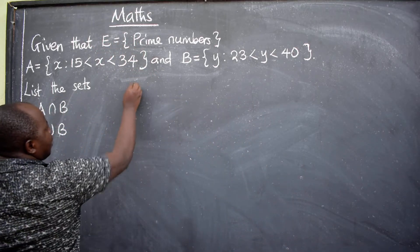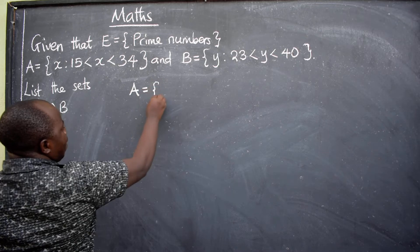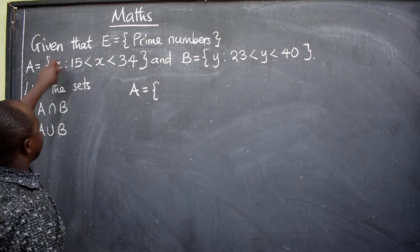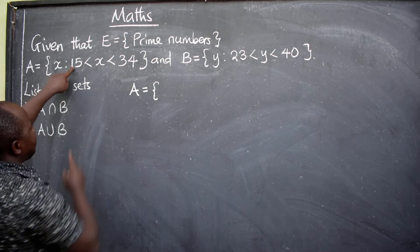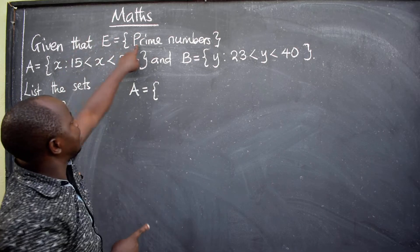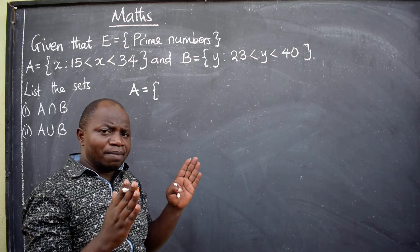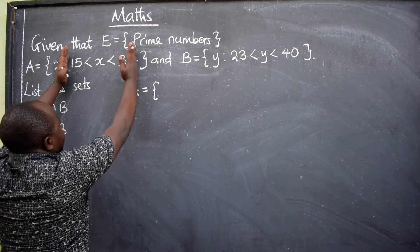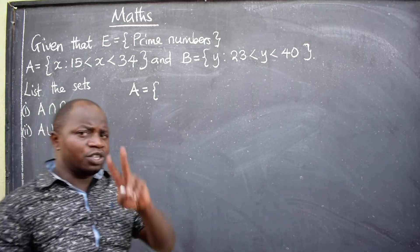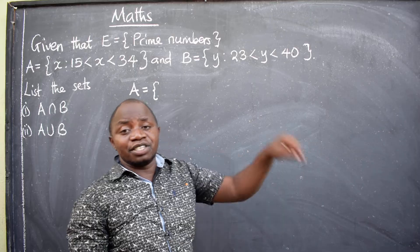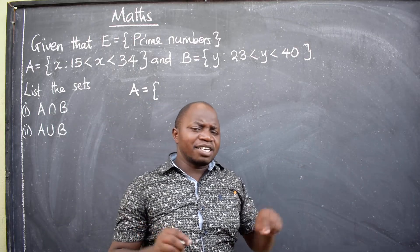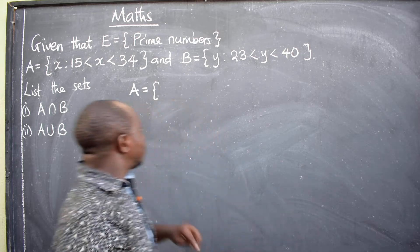So let's begin. We are going to start with set A. We are told that this X is representing numbers such that 15, so we have been given the range 15 to 34. But remember, the universal here says prime numbers. So we are interested in prime numbers within this range. Now remember, a prime number has got only two factors. That is one and a different number. That different number must be itself. That is a prime number. So, let's begin.